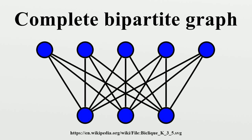Lull himself had made similar drawings of complete graphs three centuries earlier. A complete bipartite graph is a graph whose vertices can be partitioned into two subsets V1 and V2 such that no edge has both endpoints in the same subset, and every possible edge that could connect vertices in different subsets is part of the graph. That is, it is a bipartite graph such that for every two vertices v1 in V1 and v2 in V2, the edge v1-v2 is in E.